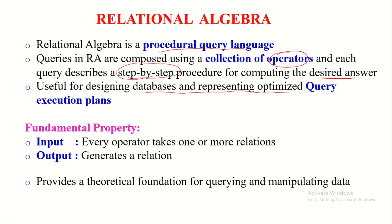Since relational algebra queries are expressed using operators, it is very easy to specify the specific order step-by-step, and parentheses used in expressions control the order of operations performed. That is why in relational algebra, it is very easy to specify the exact steps to be carried out in order to reach the desired result. This relational algebra language is used internally by the DBMS as part of the query optimizer for making an optimized query evaluation plan by the query evaluation engine.